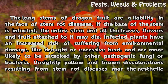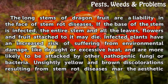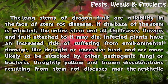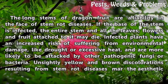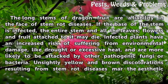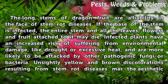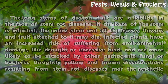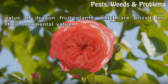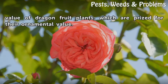The long stems of dragon fruit are a liability in the face of stem rot diseases. If the base of the stem is infected, the entire stem and all the leaves, flowers, and fruit attached to it may die. Infected plants have an increased risk of suffering from environmental damage like drought or excessive heat, and are more likely to be attacked by other pathogenic fungi or bacteria. Unsightly yellow and brown discolorations resulting from stem rot diseases mar the aesthetic value of dragon fruit plants, which are prized for their ornamental value.